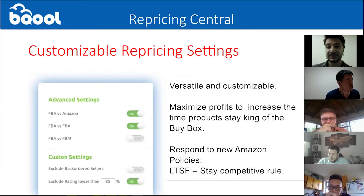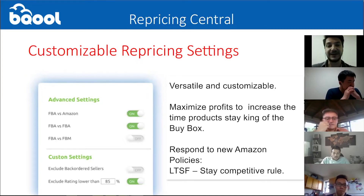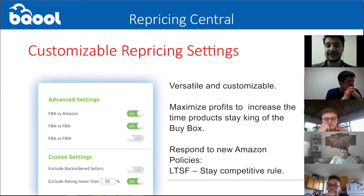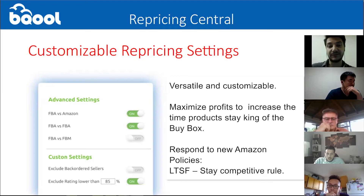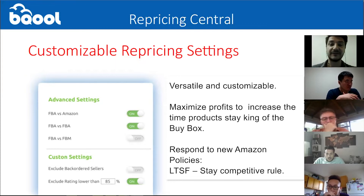The repricing rules are also fully customizable. I just put briefly that you can set in the same rule some advanced settings in case you're competing with Amazon, an FBA, or an FBM — fulfilled by merchant — seller. You can exclude some sellers, for example quarter sellers or sellers that don't have very high metrics and so on. We will look into this again later.